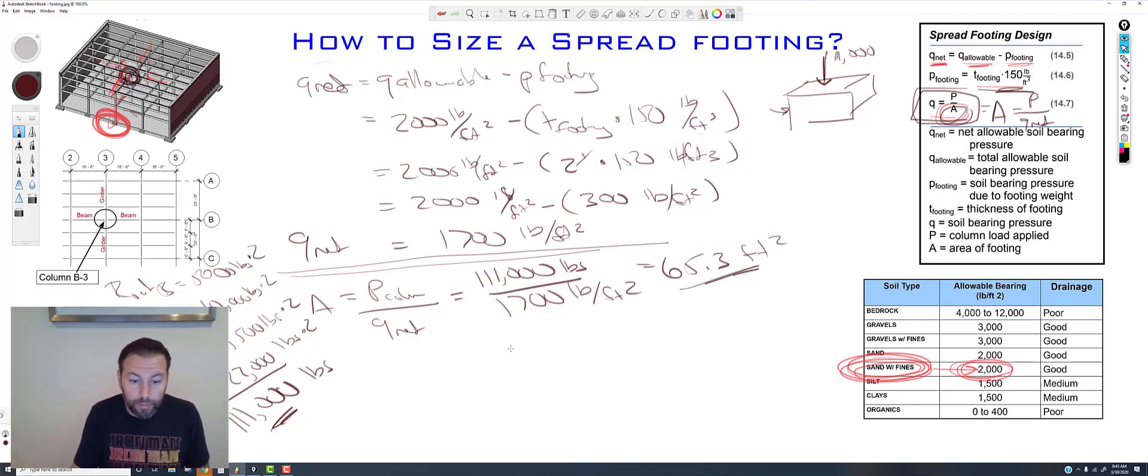If we want to make it just a square. So, then we'll do the square root. That's 65.3 feet squared. And then that will give us the dimensions of our square. So, let's go into the calculator. Square root. So, that's 8.08. There we go. 8.08 feet. For square spread footing. Or, we'll just say an 8 by 8 by 2 foot thick footing.